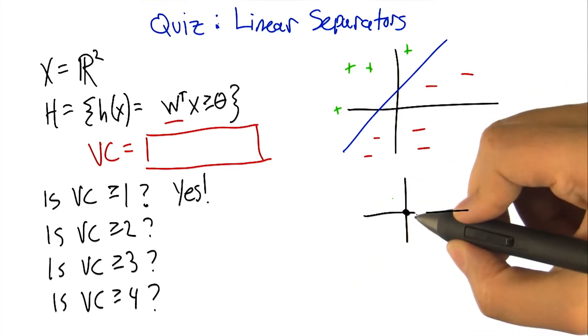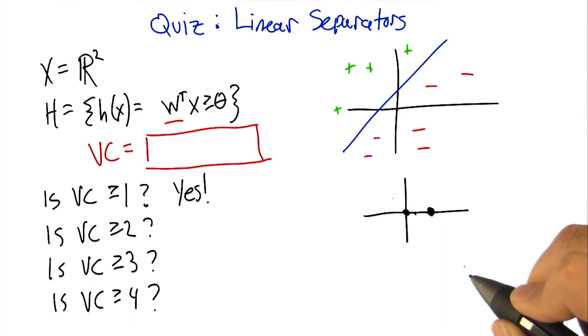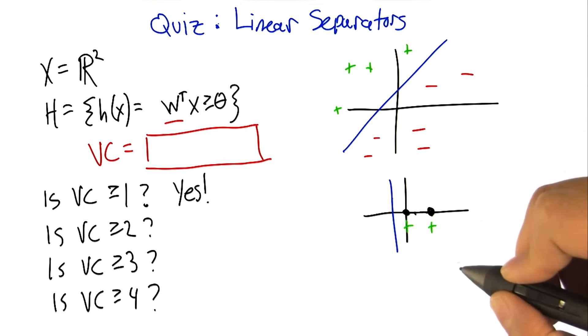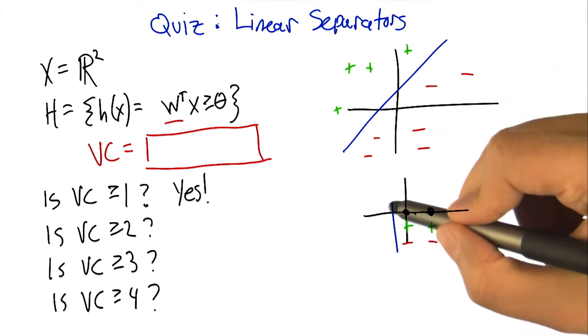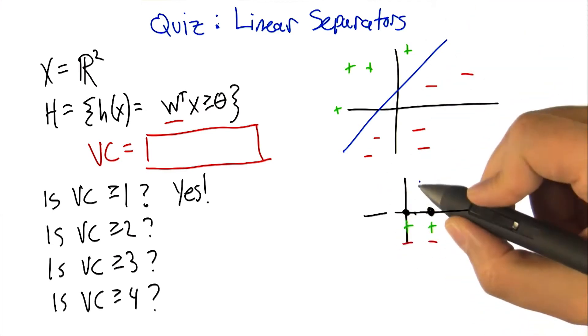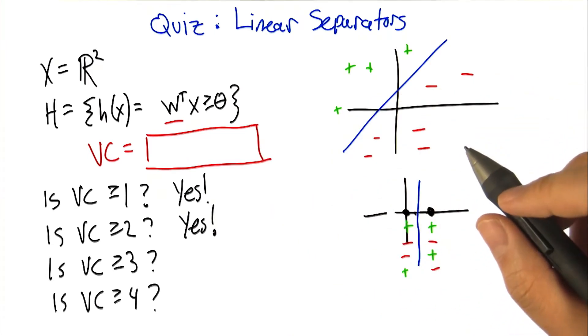And make a similar argument for VC of 2. So if the two points were on a line, then to do the four different combinations, we could put the line to the left to label both of them positive, or label both negative by flipping the weights. Now we have to do the other two cases where they have different labels. So I'm going to recommend putting a blue line between them. The one on the right is positive, the one on the left is negative, or we can flip the weights and then flip the signs.